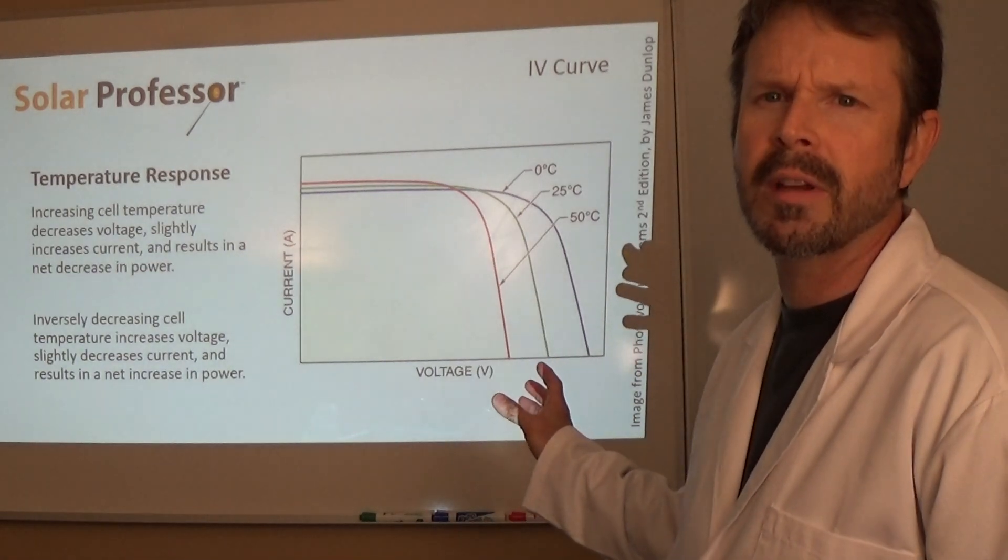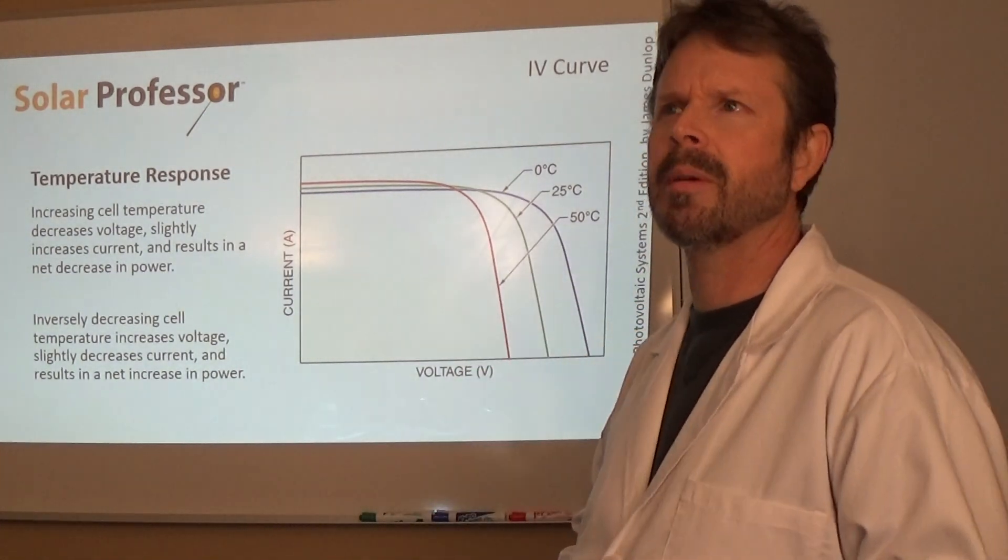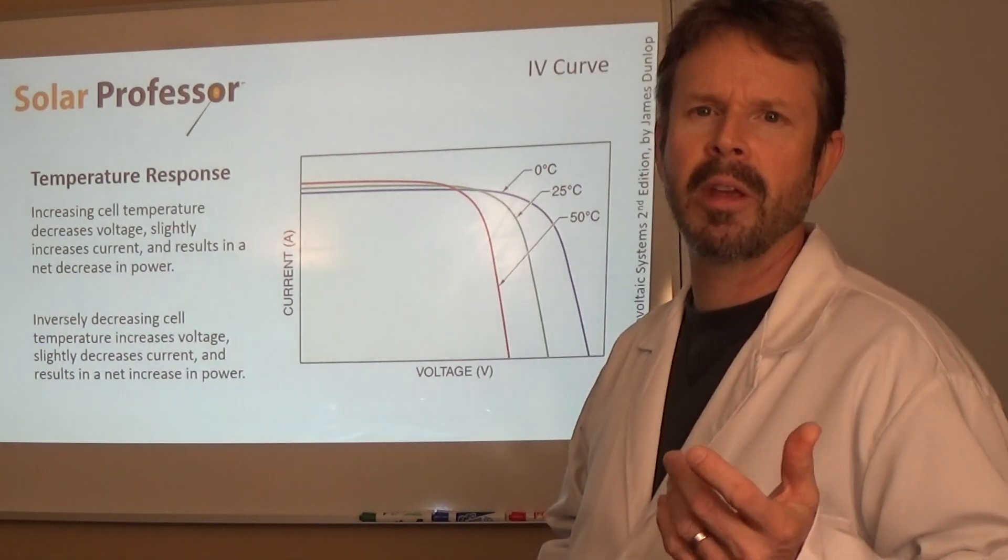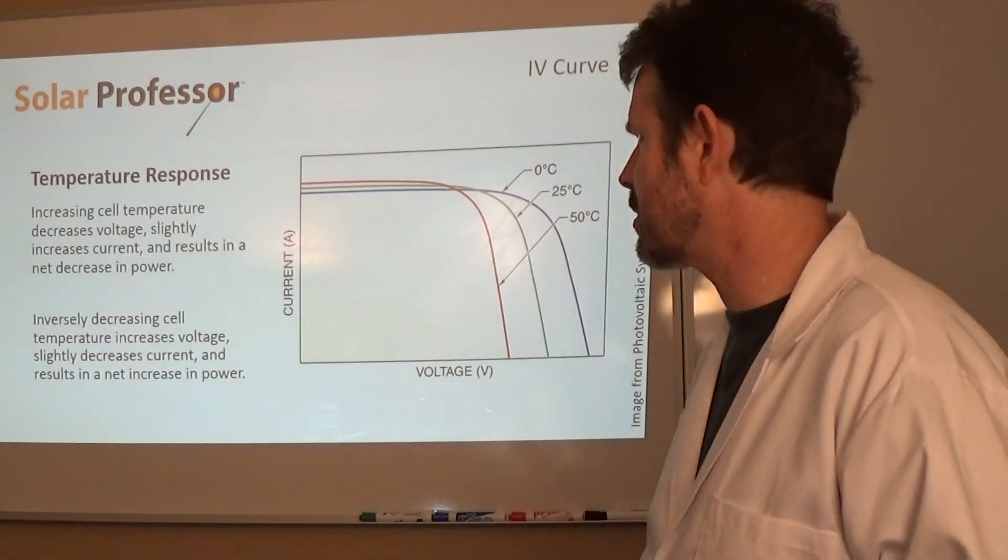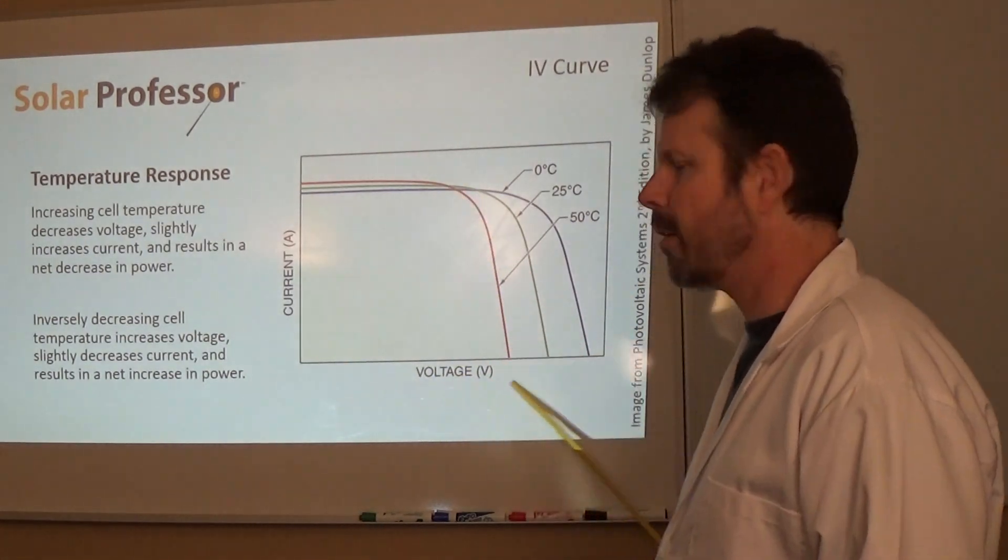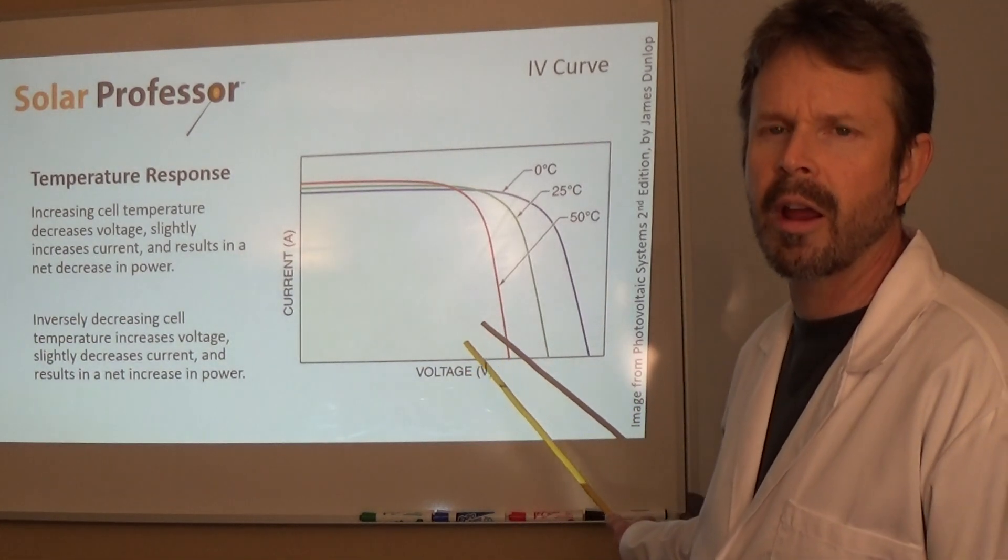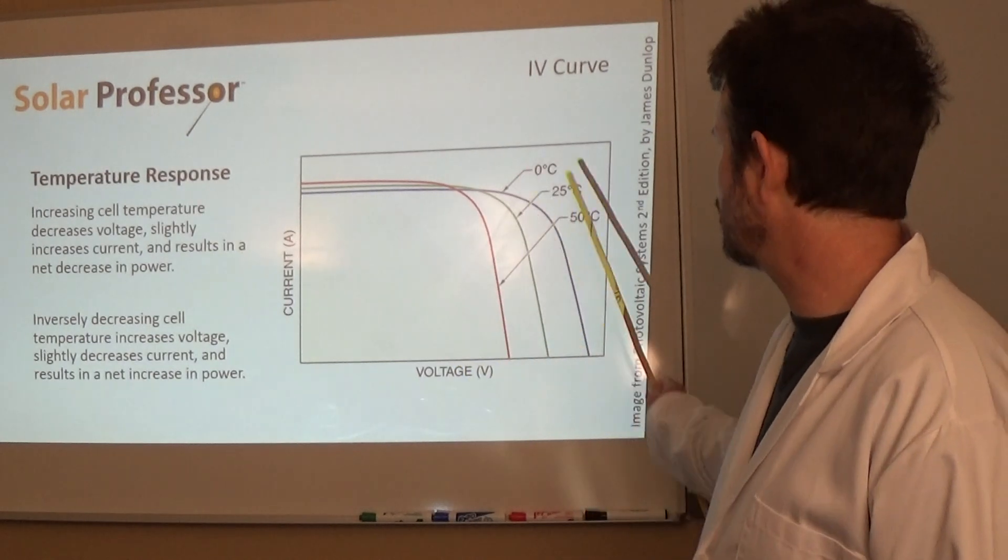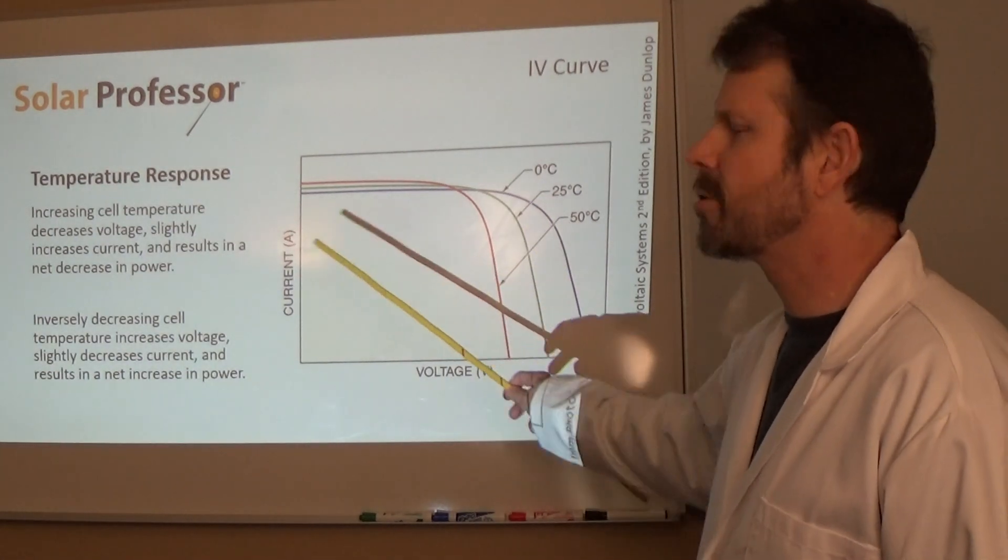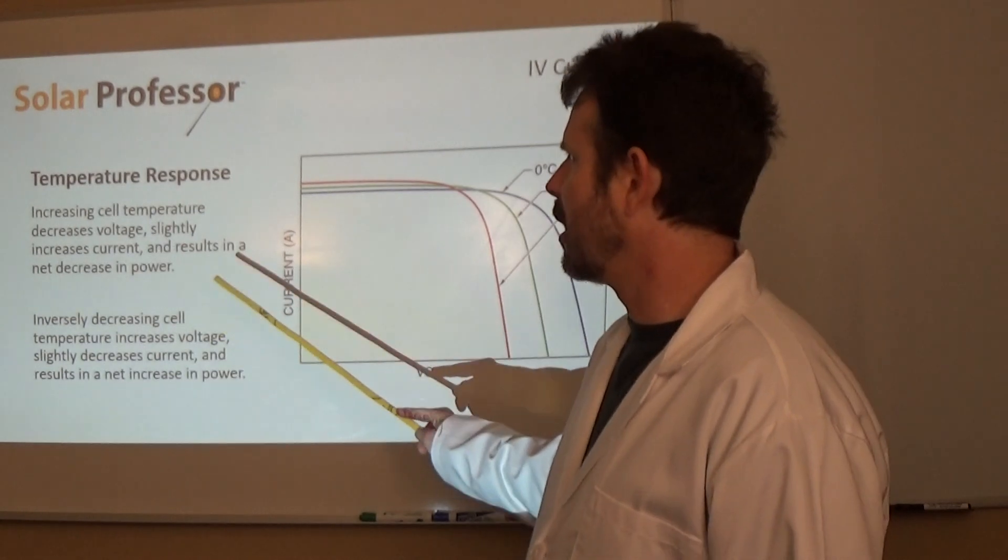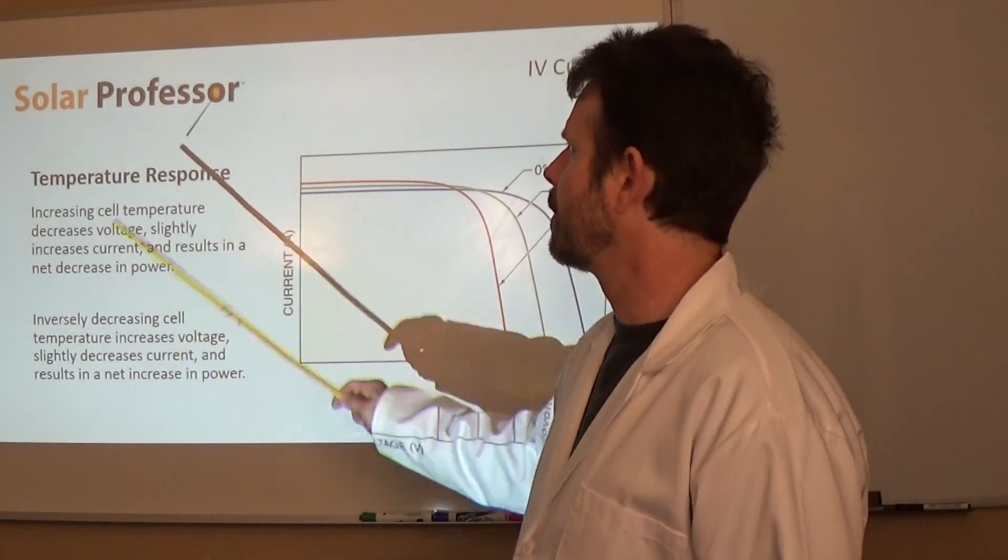This is really important for us to understand as well for the NABCEP exam—what is happening with temperature. I particularly remember some of the questions on the NABCEP pointing out there may be really cold conditions or snow conditions or high altitudes that have cold conditions. Right here is what happens on the IV curve during a temperature response. I really love these particular IV curve diagrams here from the Jim Dunlop book because it really showcases, especially with the colors, what's going on in particular with these temperatures. Let's read through this because I really want you to understand it. The book actually says this, but I always like to point out what the inverse of it is.